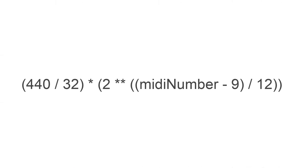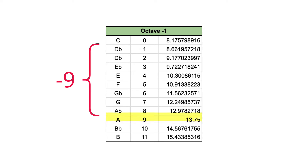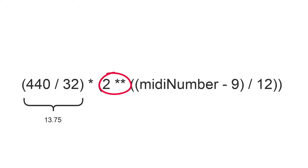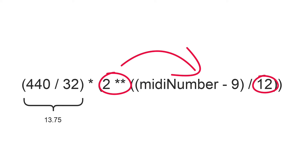Let's focus on another part of the equation: MIDI number minus 9. Here we subtract the number 9 from the MIDI number, which brings us all the way down to MIDI number 0 — the note C at 8.175 Hz. This is our new reference point, the very first MIDI number in the very first octave, octave minus 1. From here, we raise 2 to the power of that number to double the frequency, and because there are 12 notes within an octave, we divide by 12. This is the part that is hardest for me to understand — the 2 to the power of x divided by 12 part — and I'm not quite sure I actually get it still, but I'll get back to that in a minute.